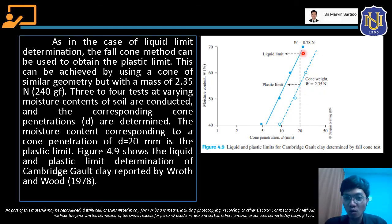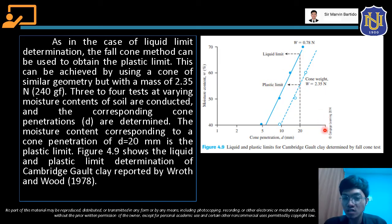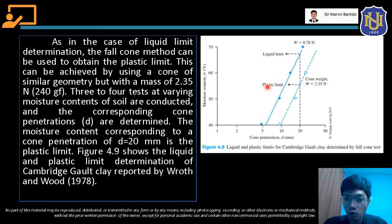In this case, kung gusto mong makuha yung liquid limit, yung 20 mm na penetration, i-project mo lang doon sa flow curve for the liquid limit and then project it papunta doon sa moisture content. Yung magiging moisture content dito, yun yung magiging liquid limit. And then for the plastic limit naman, you just project also the 20 mm penetration papunta doon sa flow curve natin for plastic limit and then project mo papunta doon sa moisture content — yung magiging moisture content natin dito, yun yung magiging plastic limit.